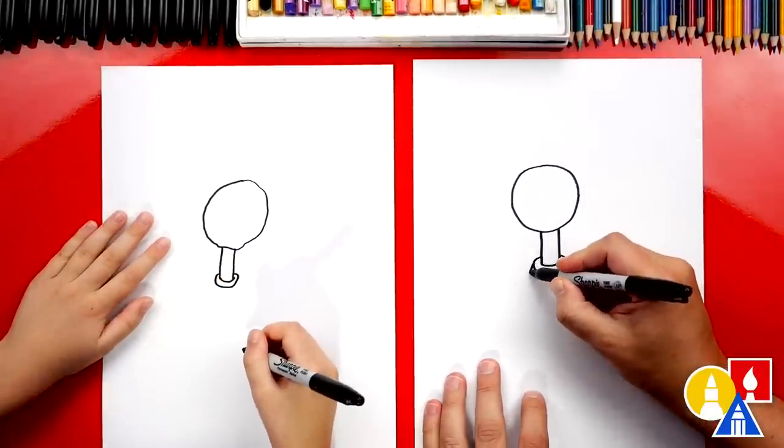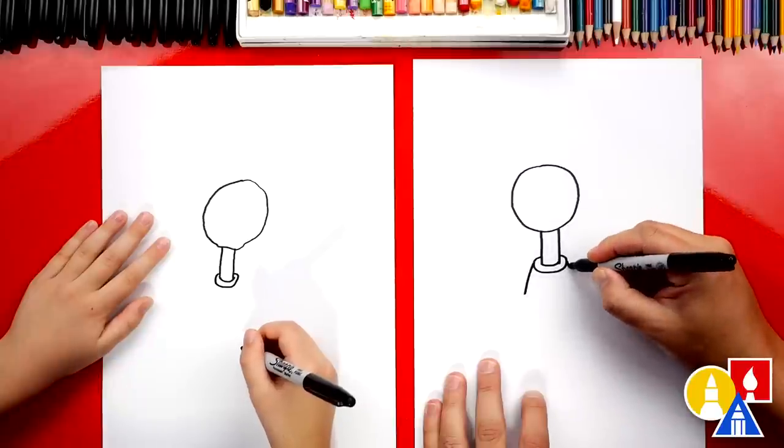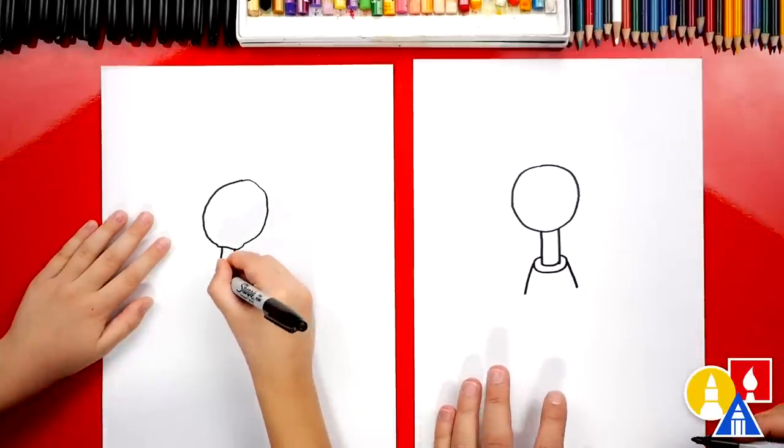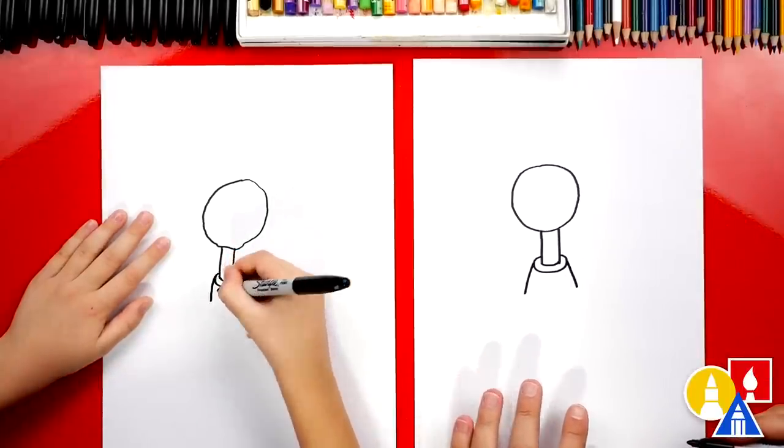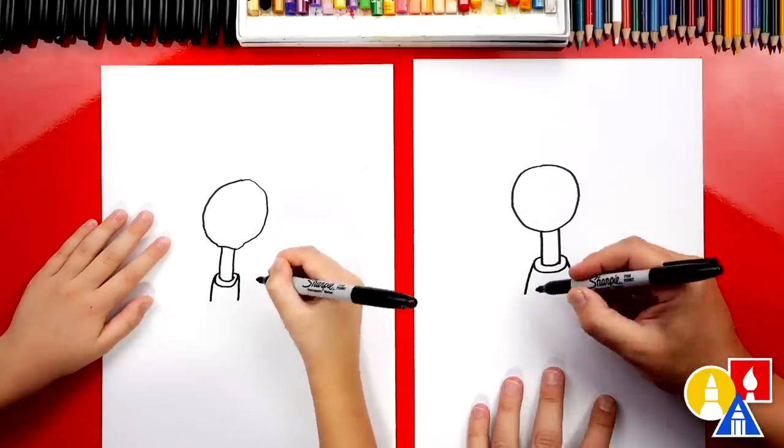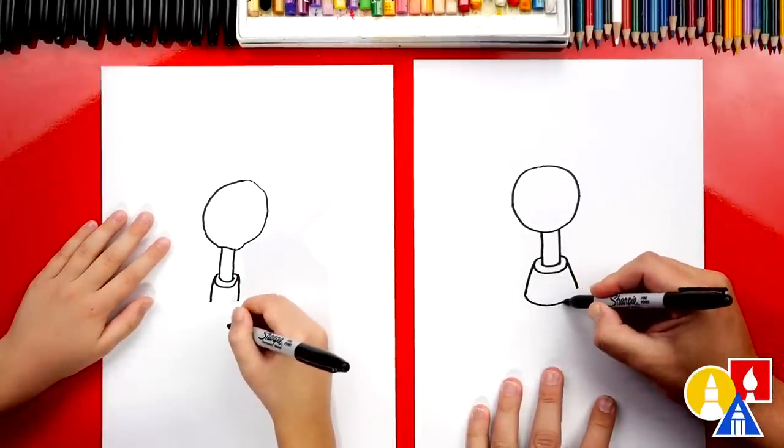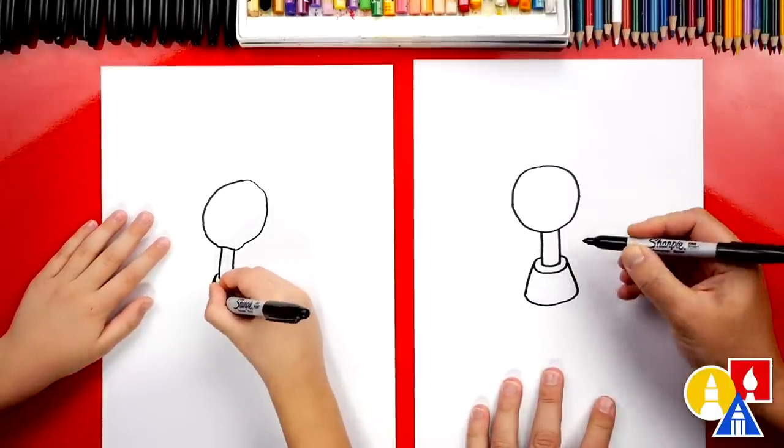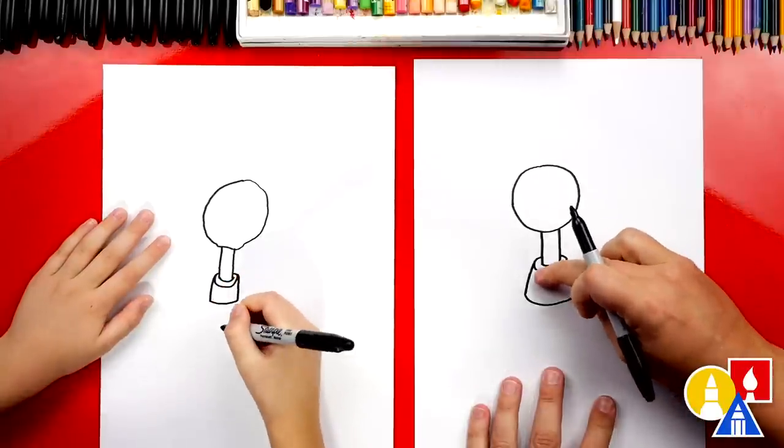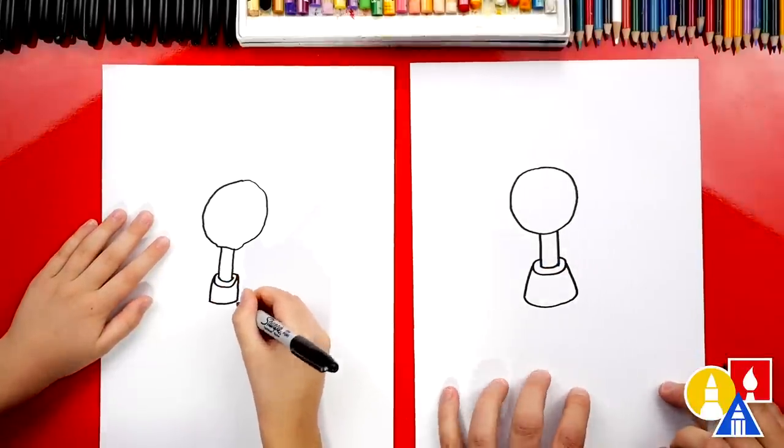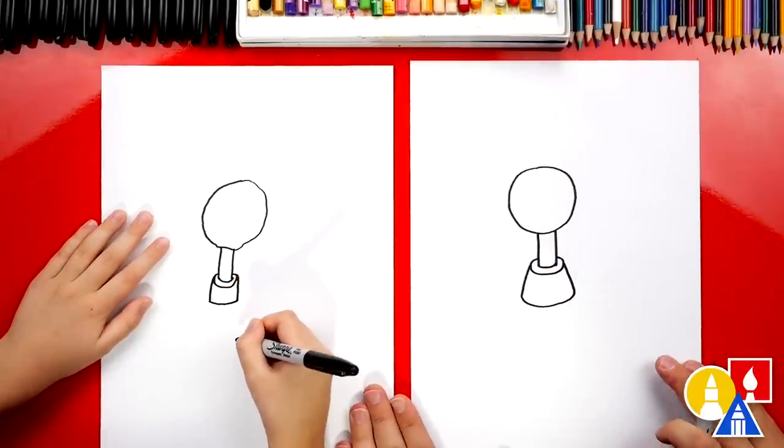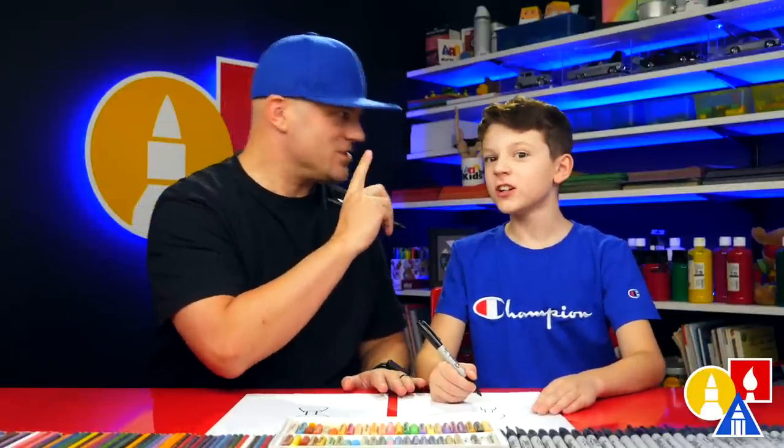Now we're going to draw a diagonal line that comes down on the left and also on the right. Then we can connect those two diagonal lines with another curve that matches up here. I like how yours is turning out. It's really cool that yours is different than mine because the most important thing is to have fun and to practice. Remember to practice. We're practicing.